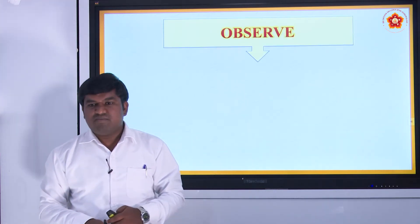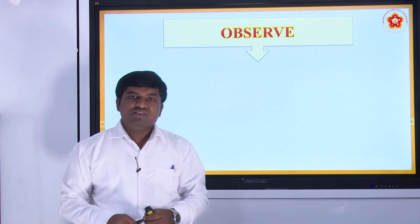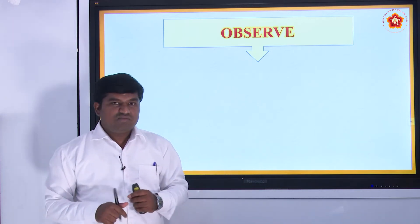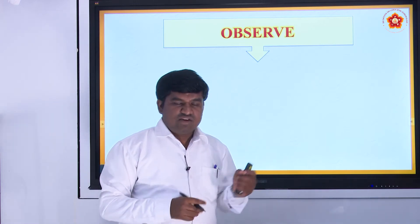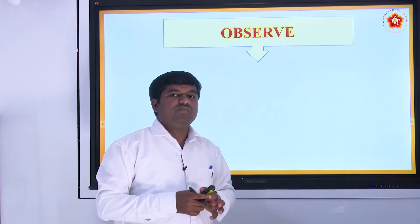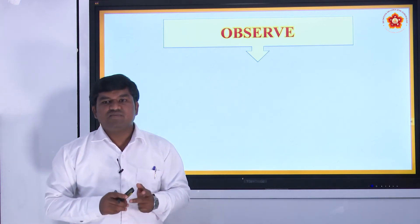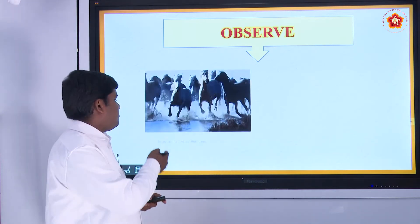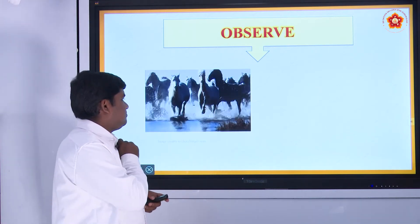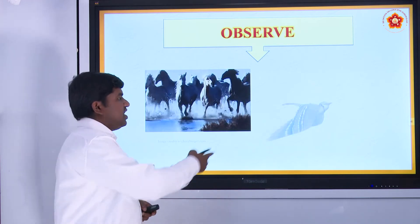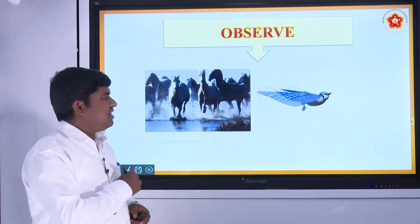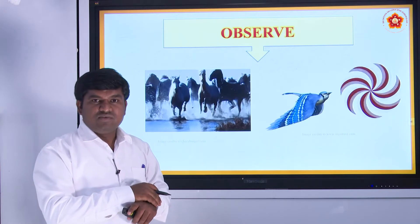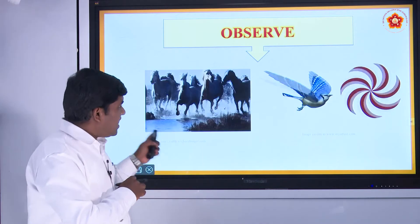Then come to this chapter, part two. In this part two, we can observe motion. Observe the first picture and also this bird — all are in motion. Some are moving forward, that one is in circular motion, this one is flying — all are in motion.